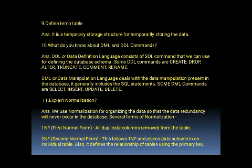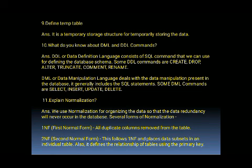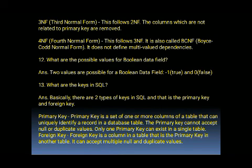The next question is: what is normalization? We use normalization for organizing data so that data redundancy will never occur in the database. There are several forms: First Normal Form — all duplicate columns are removed from the table. Second Normal Form — follows 1NF and places data subsets in individual tables, defining relationships using the primary key. Third Normal Form — follows 2NF and removes columns not related to the primary key. Fourth Normal Form, also called BCNF or Boyce-Codd Normal Form, follows 3NF and does not define multi-valued dependencies.